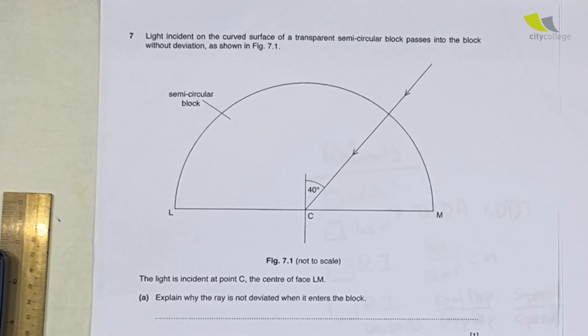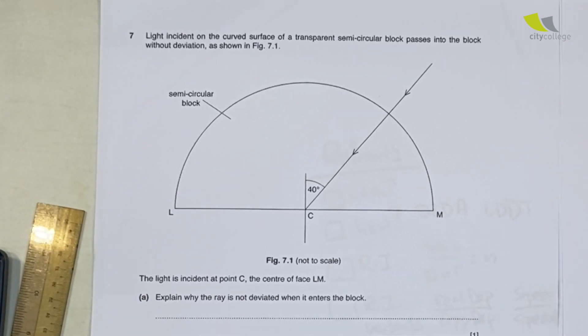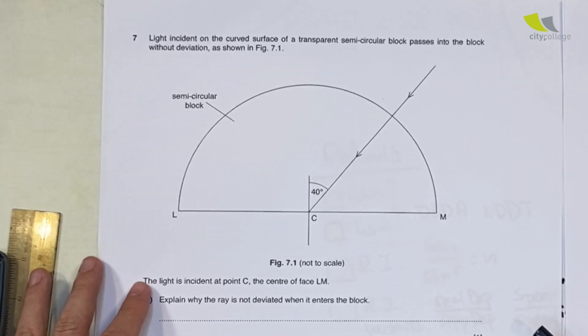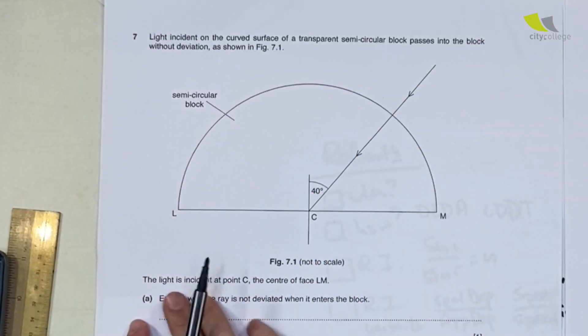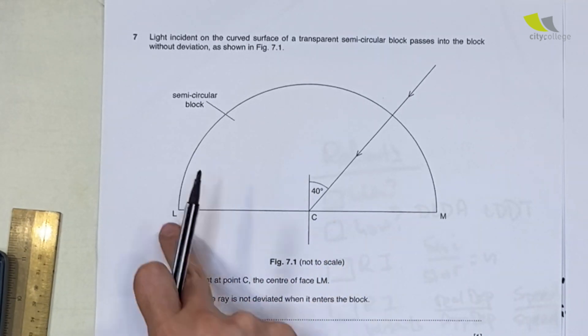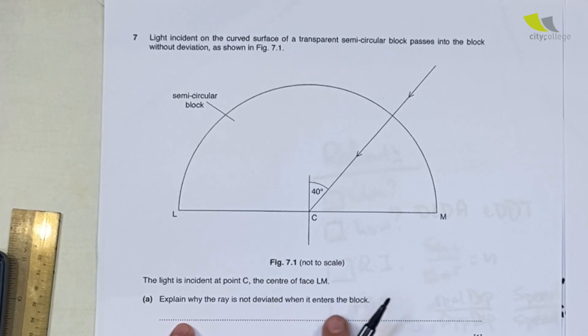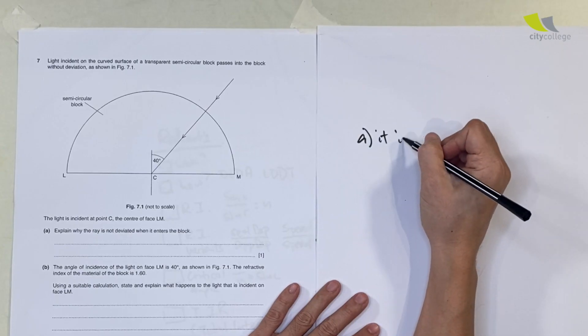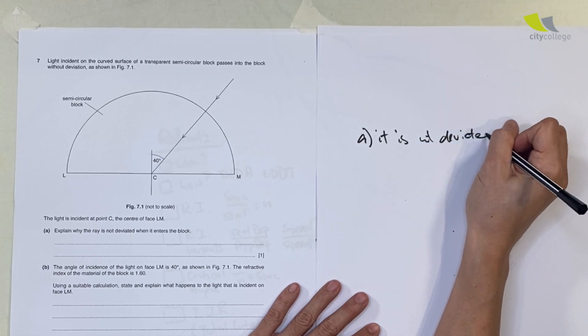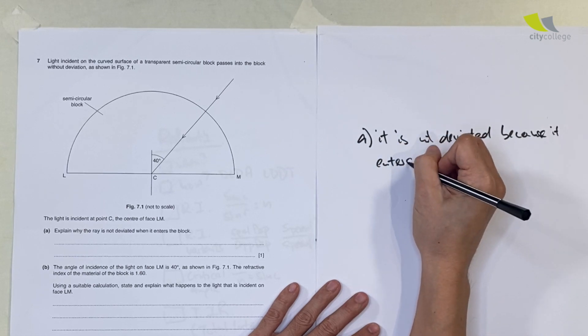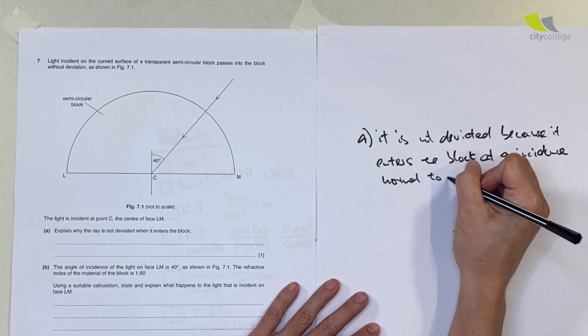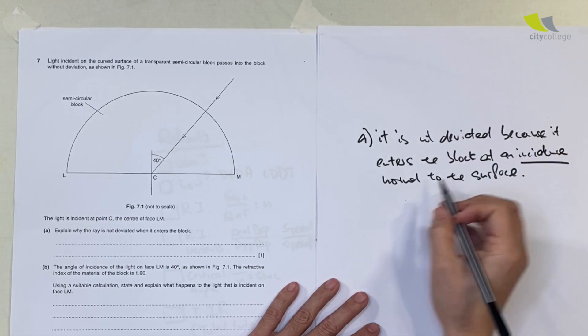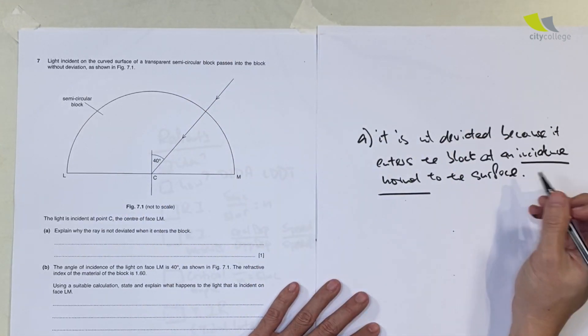Let's solve questions from 2019 paper. There are actually two questions, one in Section A, the other in Section B. Let's look at the compulsory question in Section A first. Light incident on the curved surface of a transparent semicircular block passes through without deviation as shown. Light is incident at point C on face LN. Explain why the light ray is not deviated when it enters the block. It is not deviated because it enters the block at an incidence normal to the surface. The keywords are incidence normal, meaning it's parallel to the normal.